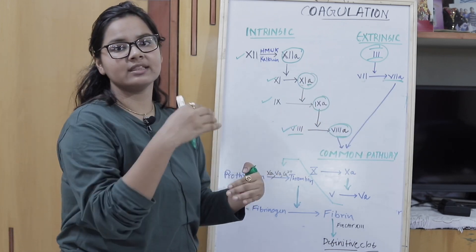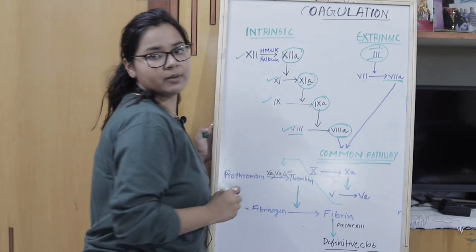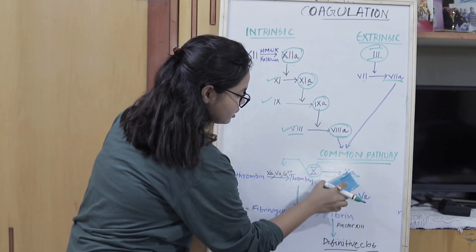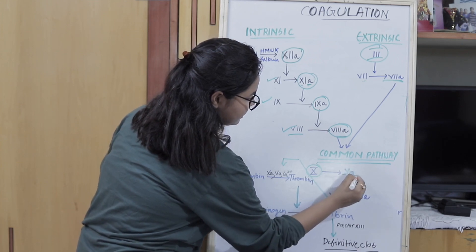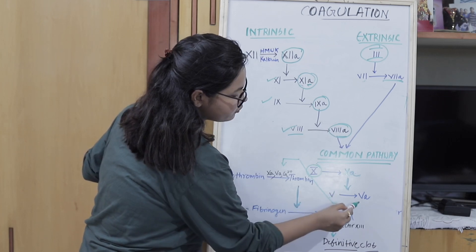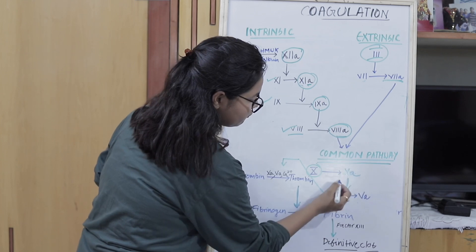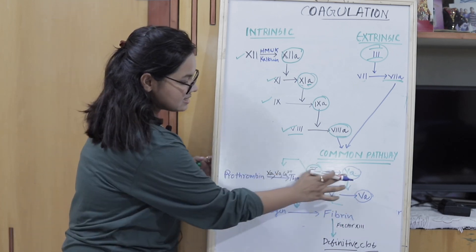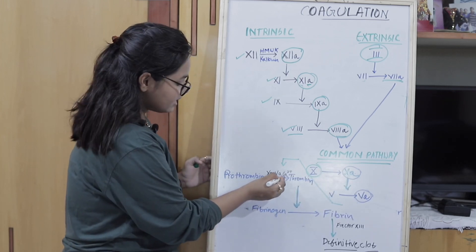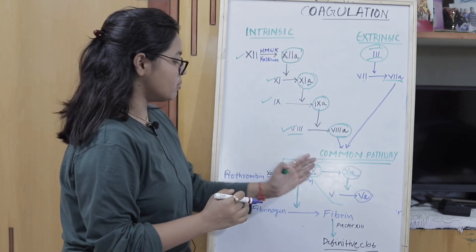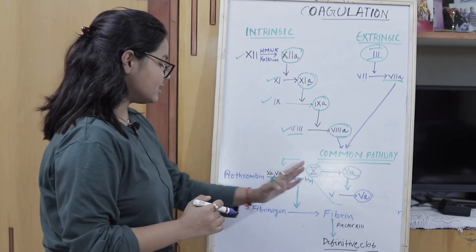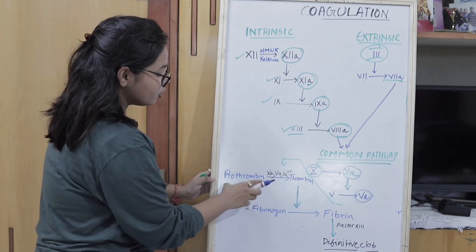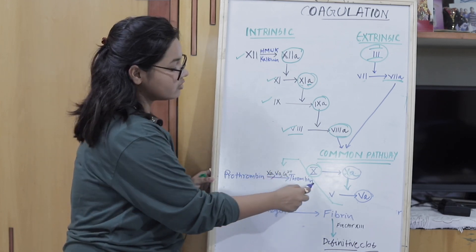Both the intrinsic and extrinsic pathways ultimately converge to enter the common pathway. In the common pathway, factor 10 gets converted to 10A, and this factor 10A converts factor 5 to 5A. So in the common pathway we have 10A and 5A. These, together with calcium, carry out an important conversion: prothrombin is converted to thrombin in the presence of factor 10A, 5A, and calcium.